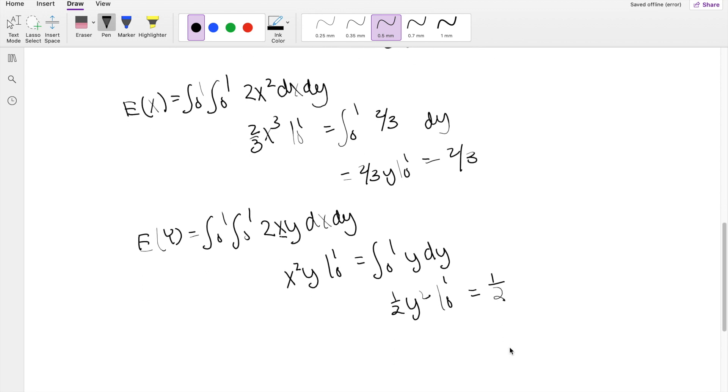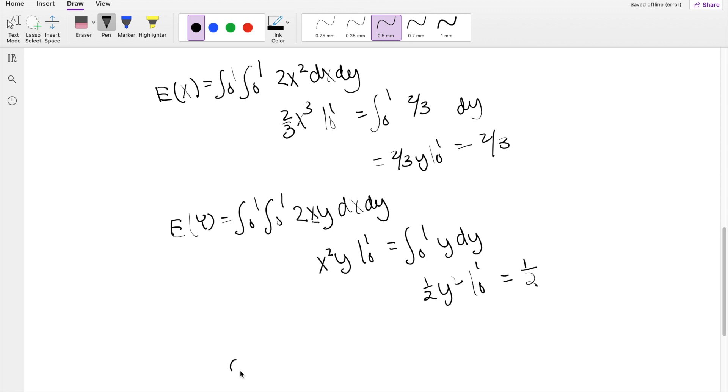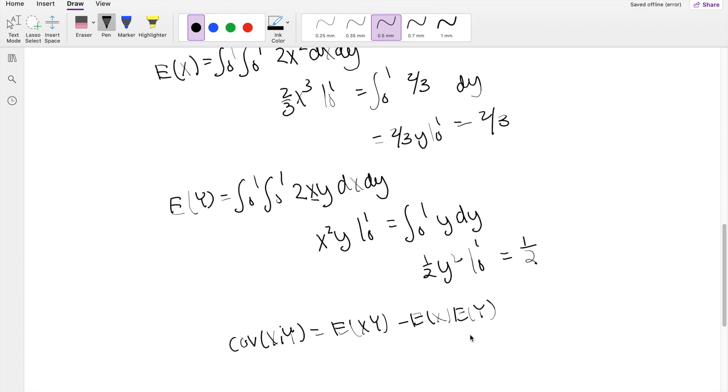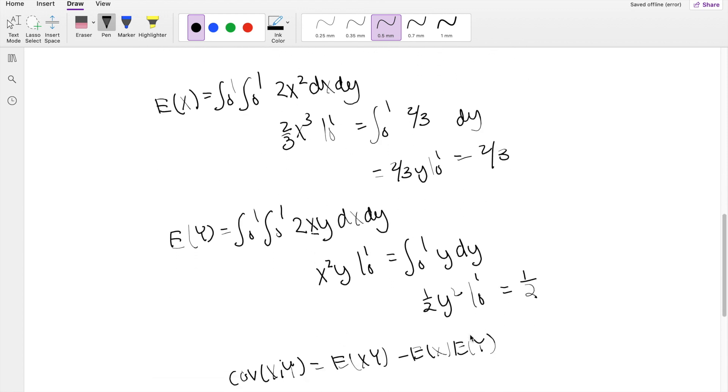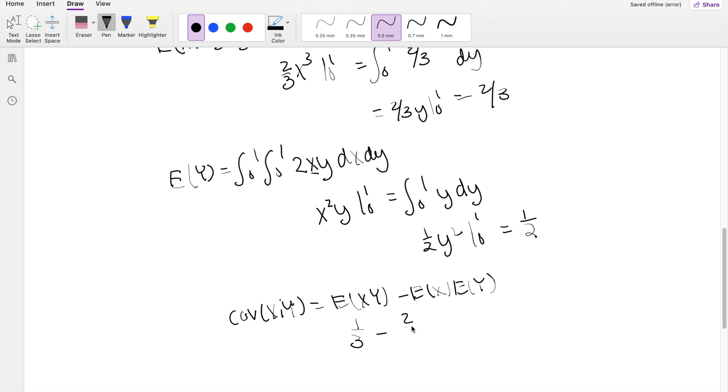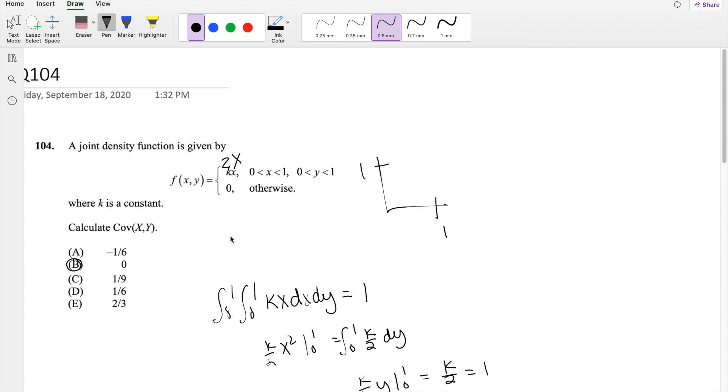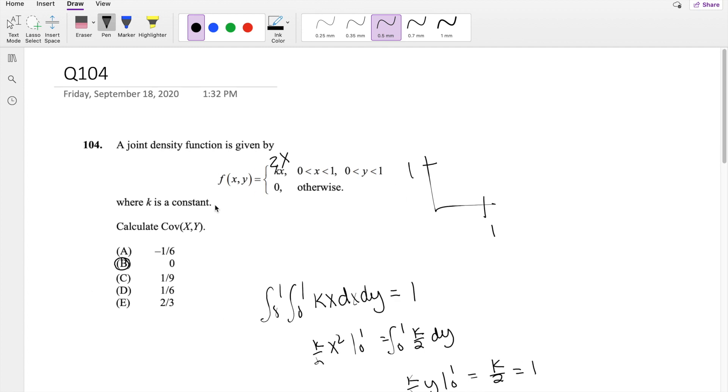Because the lower limit all just gives you 0. So then putting it back in our covariance formula. Covariance of x, y is equal to expectation of xy minus expectation of x times expectation of y. Expectation of xy we found was 1 third minus 2 thirds times 1 half. So this is equal to 1 third minus 2 sixths, which is equal to 0. So covariance basically just measures the relationship between x and y. So when covariance is equal to 0, that means the relationship is independent. So x and y are independent. So if you notice from the get-go that this function is independent, then you can just automatically say, oh, the covariance must be 0. But if not, you can just take the long way. The integration is not too bad.